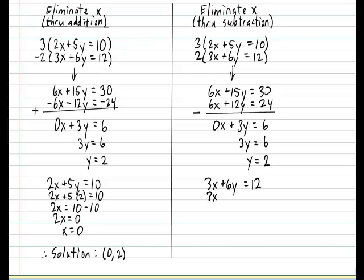So 3x plus 6 times 2 is equal to 12. Therefore, 3x is equal to 12 minus 12. 3x is equal to 0. Therefore, x is equal to 0. And, as anticipated, we should get the exact same solution.